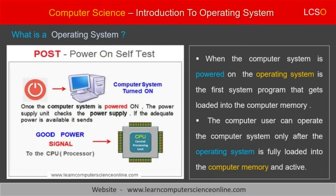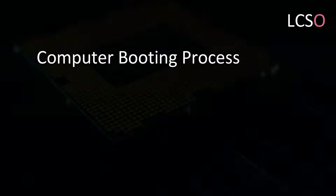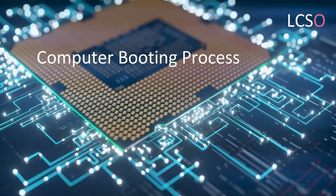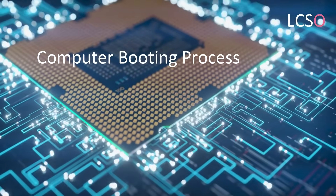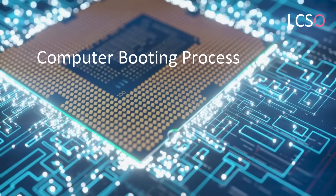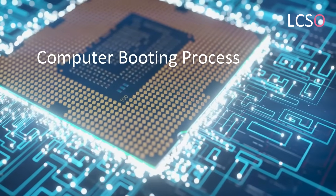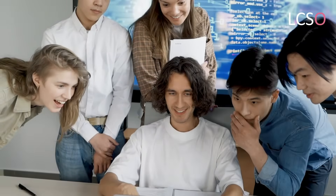When we power on and start the computer, it is the operating system that gets loaded into the main memory RAM of the computer. This startup operation, which loads the operating system into the memory, is called the computer booting process. The computer user can operate the computer system only after the operating system software is fully loaded into the computer memory and it is fully operational.